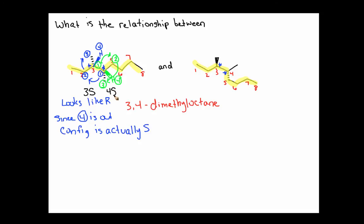So we have 3S, 4S. So this compound has the name 3S, 4S, 3,4-dimethyloctane.